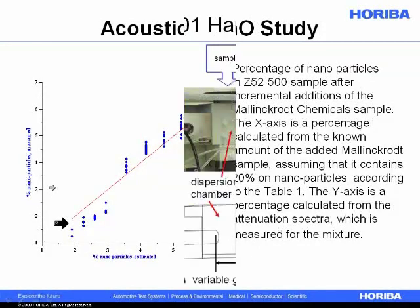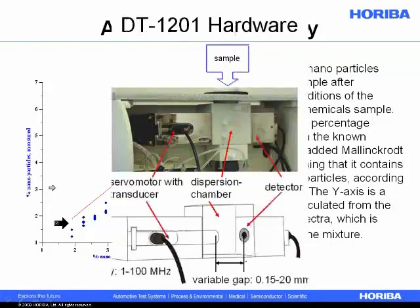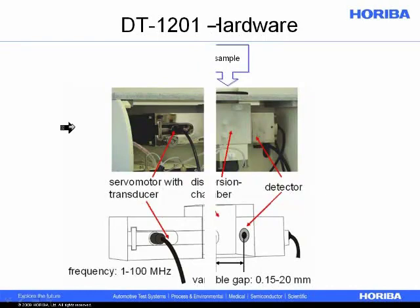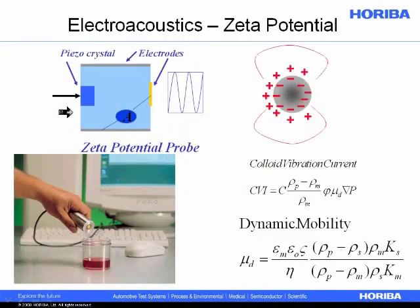This is a picture of the instrument used for those acoustic studies — the DT-1201. The sample is just added here, often without dilution. We have a transducer and a detector, and we look at attenuation as a function of distance between the transducer and the detector. In the same instrument we can also measure the charge on the surface of the particles — zeta potential — using an acoustic zeta potential probe, or CBI probe.